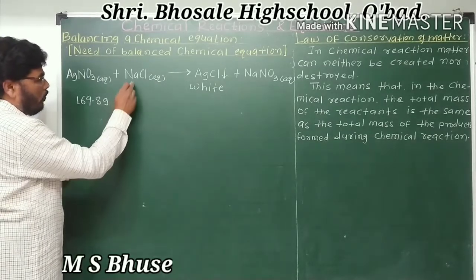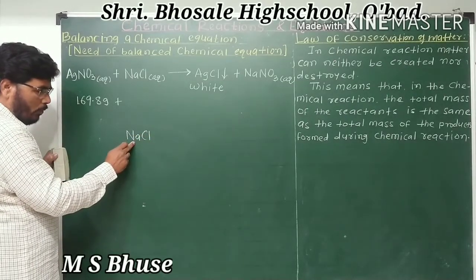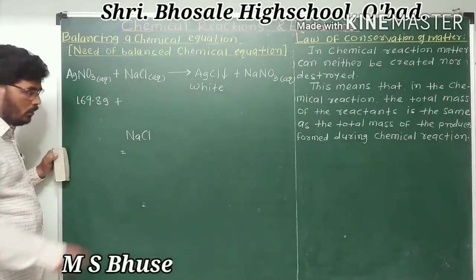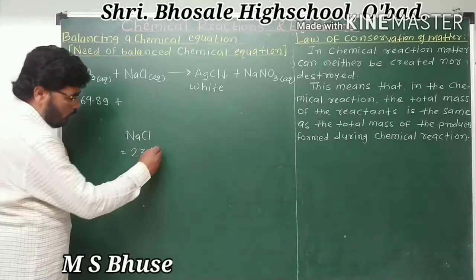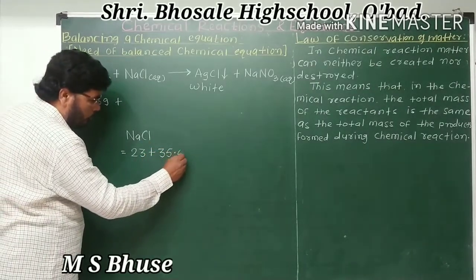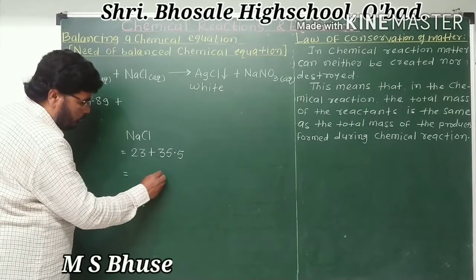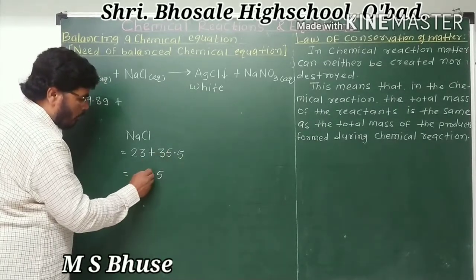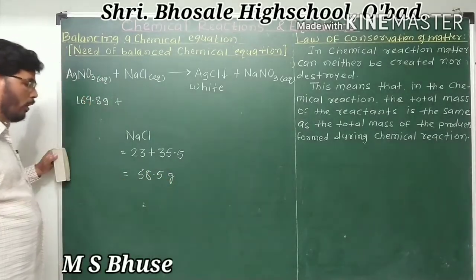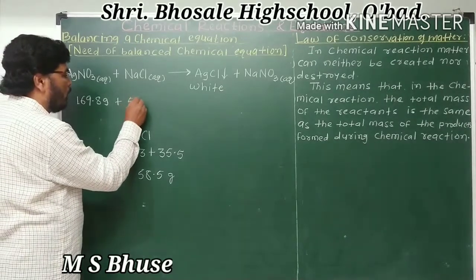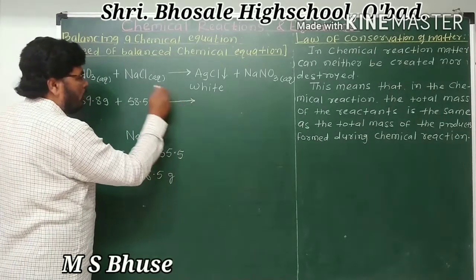The mass of sodium chloride equals the mass of sodium plus the mass of chlorine. Atomic mass of sodium is 23, and atomic mass of chlorine is 35.5. Hence, the mass of sodium chloride is 58.5 grams.